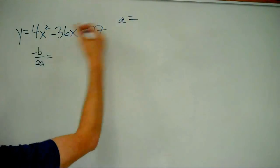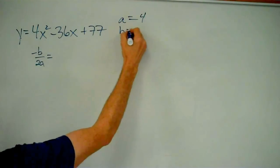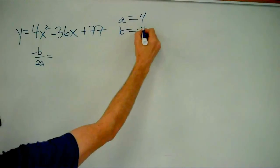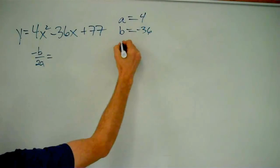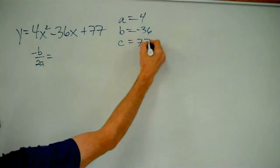a is this coefficient, 4. b is this coefficient, negative 36. c is this coefficient, or that constant, actually, 77.